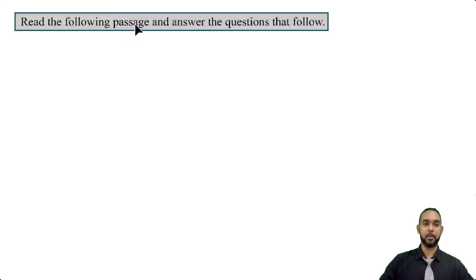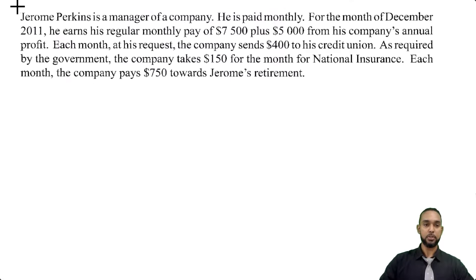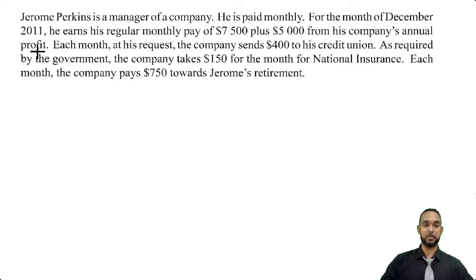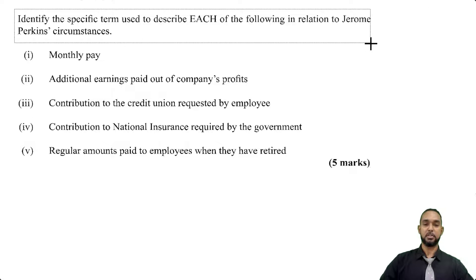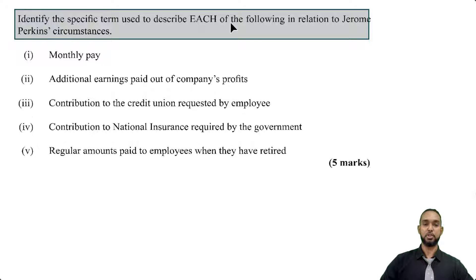We are told to read the following passage and answer the questions that follow. Jerome Perkins is a manager of a company. He is paid monthly. For the month of December 2011, he earns his regular monthly pay of $7,500 plus $5,000 from his company's annual profit. Each month at his request, the company sends $400 to his credit union as required by the government. The company takes $150 for the month for national insurance. Each month, the company pays $750 towards Jerome's retirement. The instructions say: identify the specific term used to describe each of the following in relation to Jerome Perkins's circumstances.